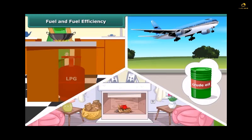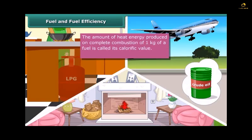All fuels do not burn efficiently. Fuel efficiency is determined by its calorific value. The amount of heat energy produced on complete combustion of 1 kg of a fuel is called its calorific value and it is expressed in a unit called kilojoule per kg.